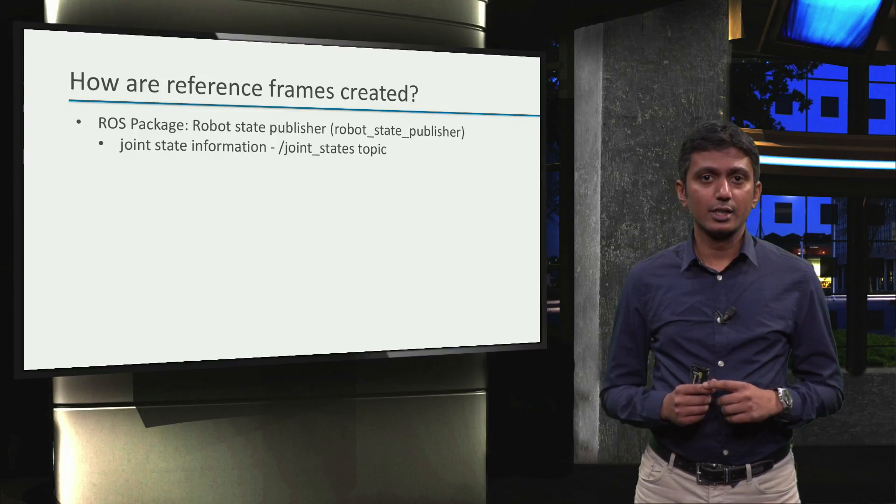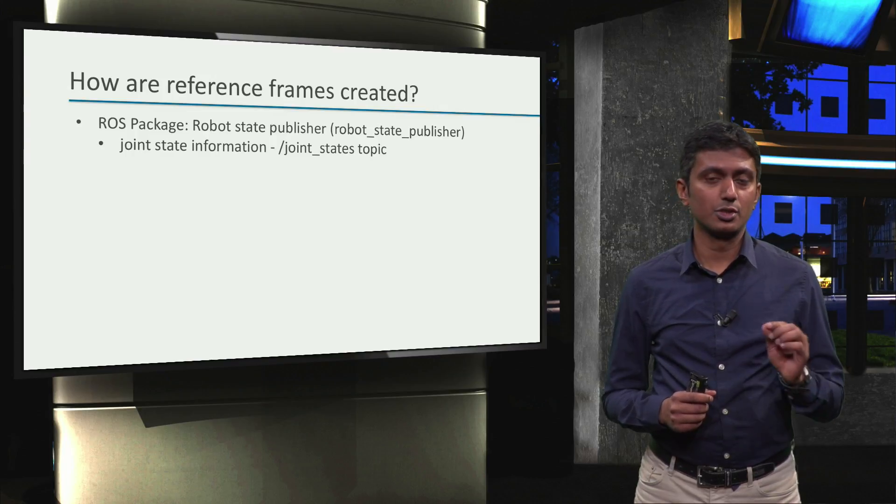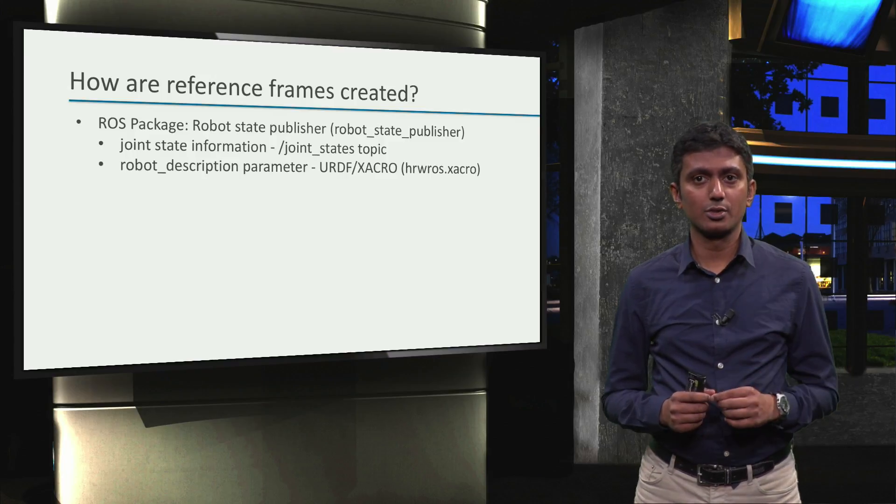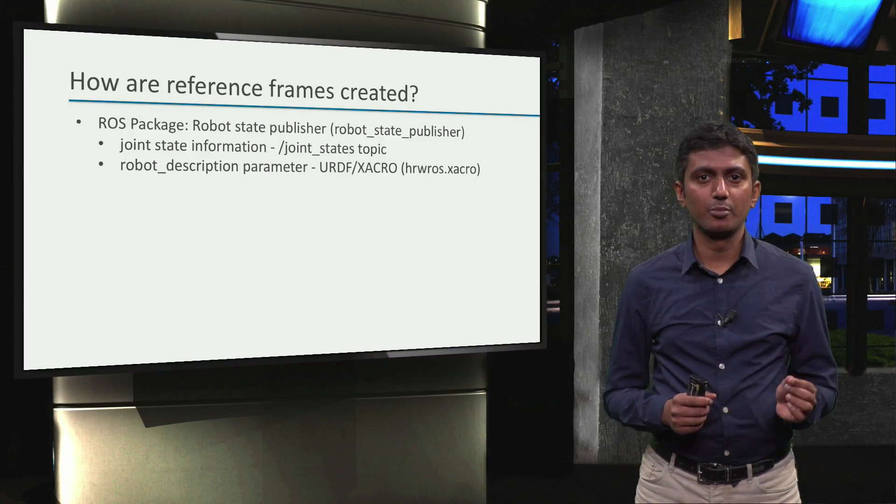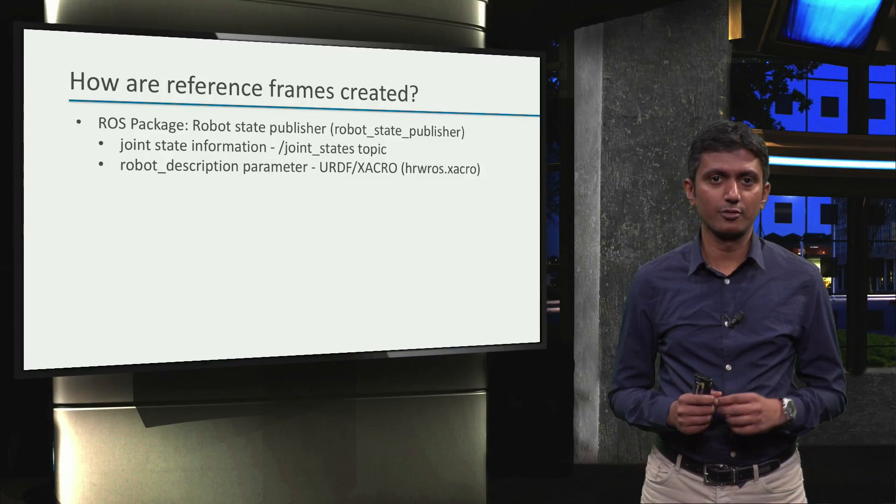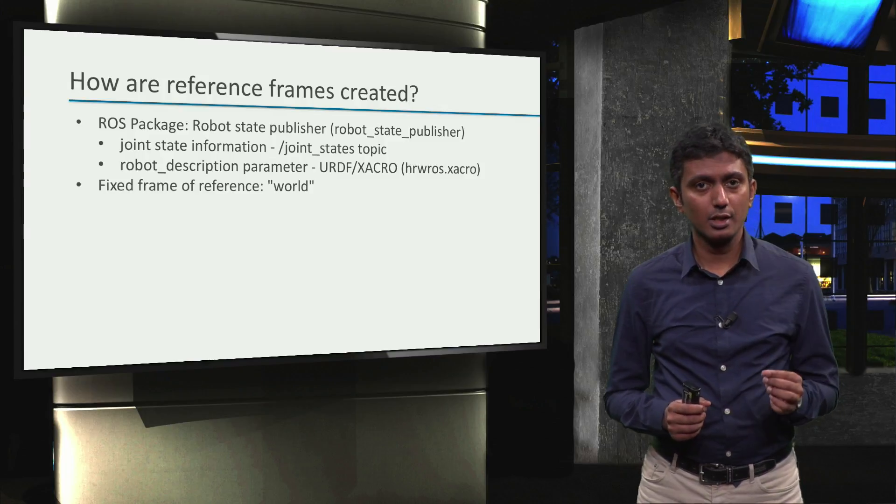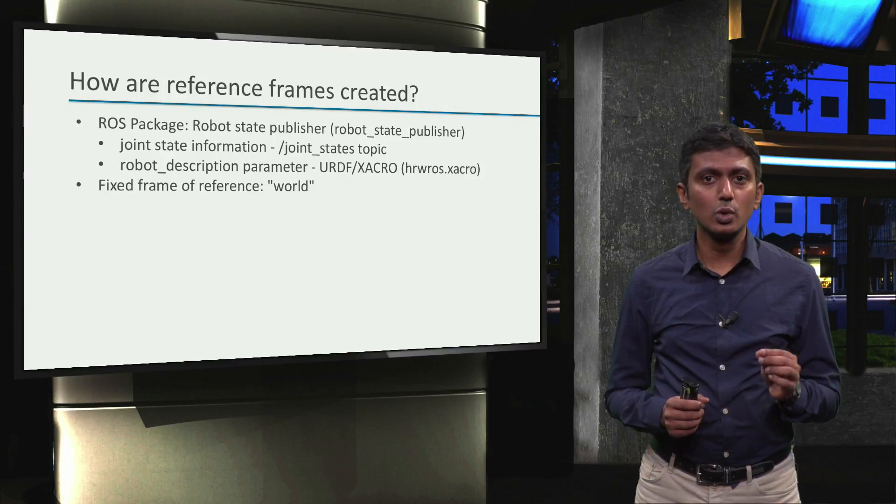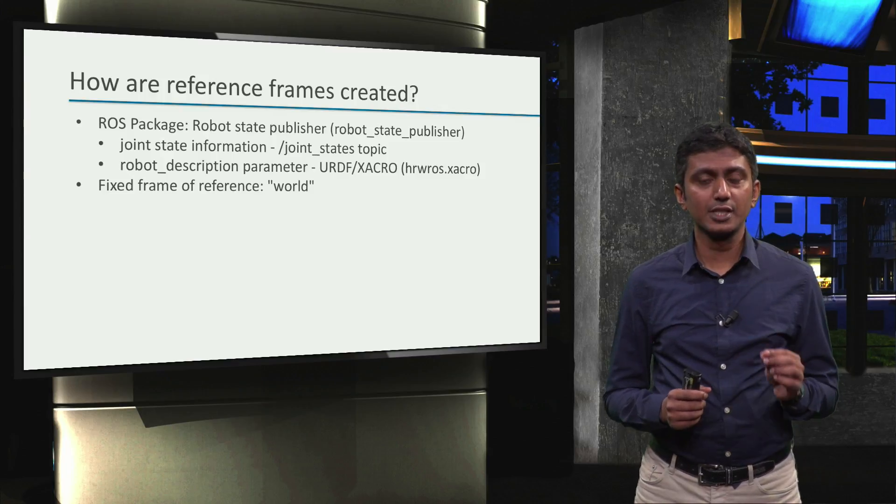The first one is information regarding the movable joints on the joint states topic. The second one is the robot_description parameter that is populated from the URDF or Xacro files. Additionally, the RobotStatePublisher also uses the root link of the Xacro file as the fixed frame of reference.